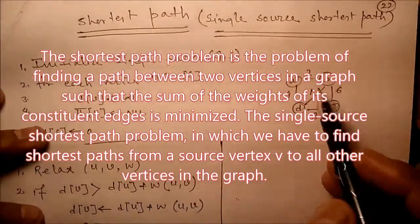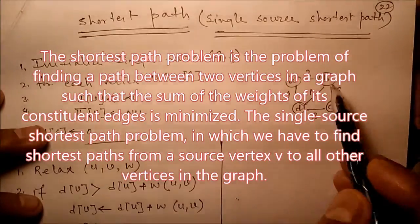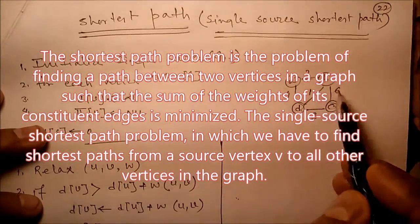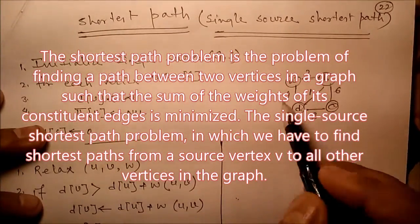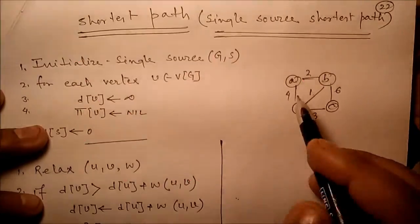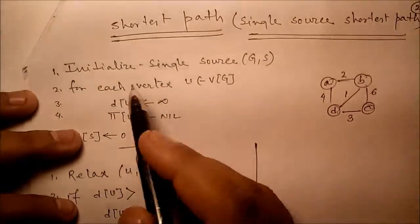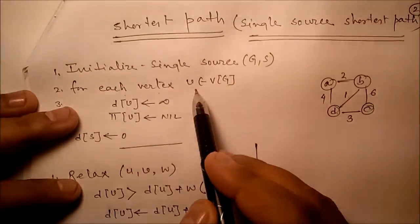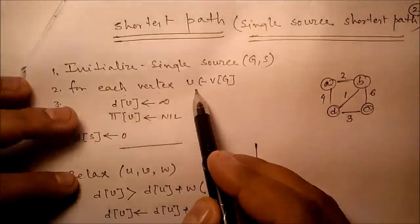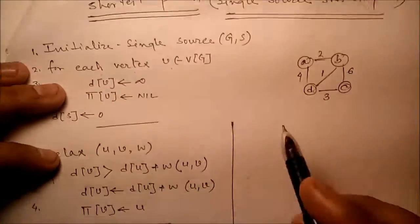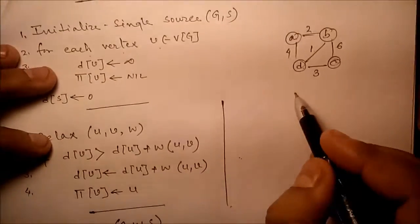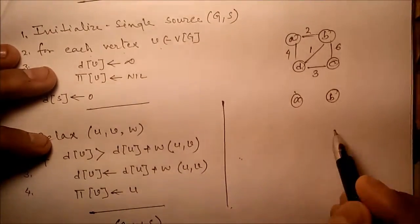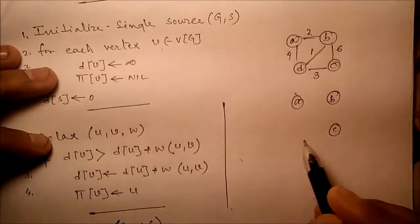There is a graph with nodes a, b, c, d and weights between them: 2, 6, 3, 1, 4. Now, initialize single source(G, s): for each vertex v — a, b, c, d — there are two variables d and π.